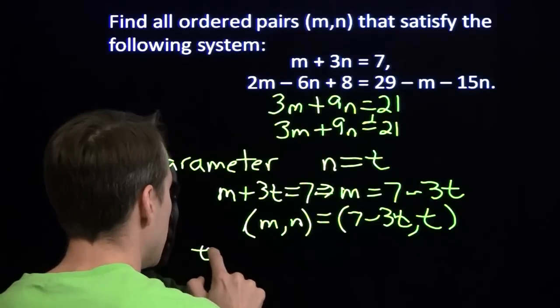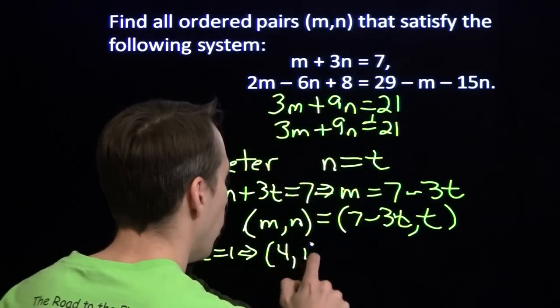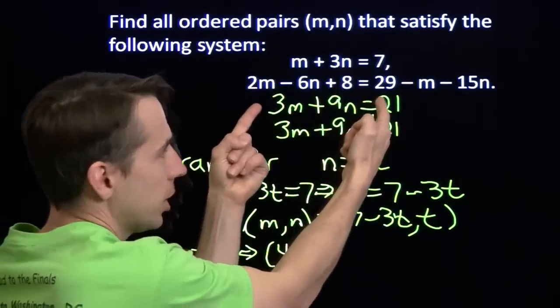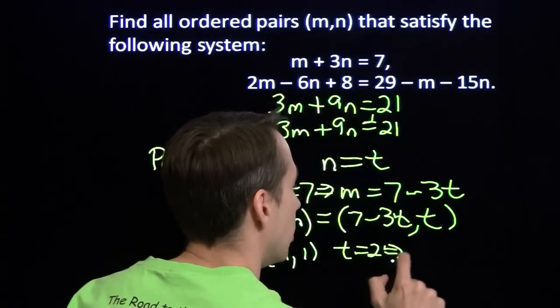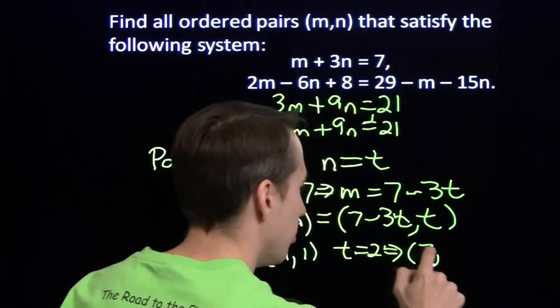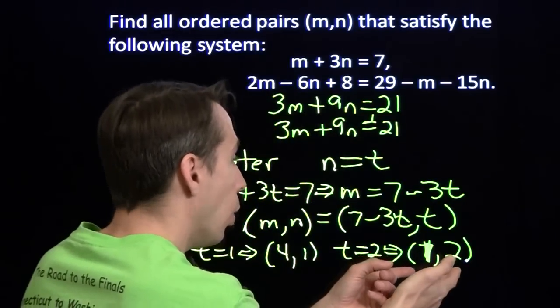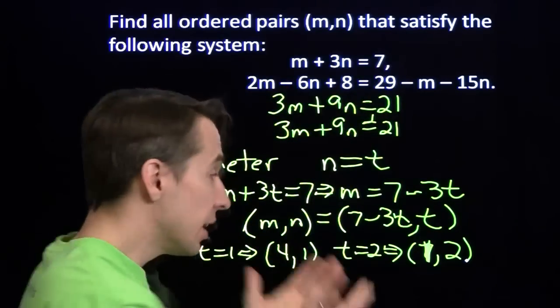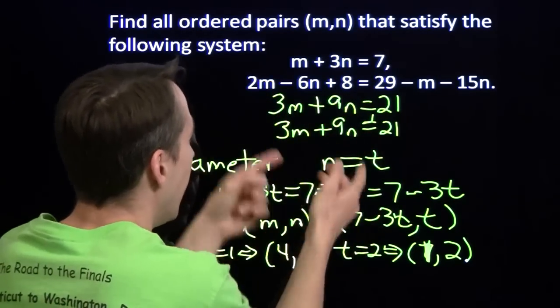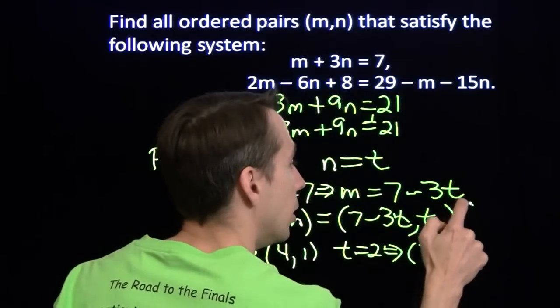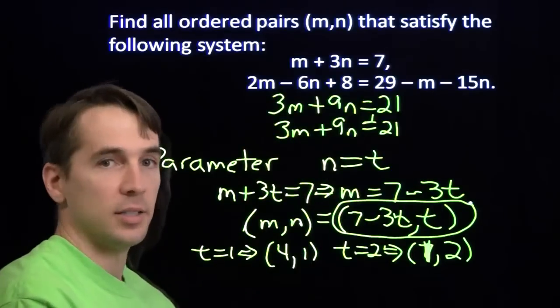For example, if I picked t equals 1, I'd put that in here, I'd get 4, 1. If we put 4, 1 in there, sure enough it works. It's going to work here because this equation is the same as that one. And look what happens when I pick, say, t equals 2. I'll get 7 minus 6, which is just 1. 1, 2. Now if I take 1, 2 and put that in here, 1 plus 6 is 7. That works as well. Anything I pick for t, I can use this little formula here to grind out a value of m and I'll get a solution to this equation. So this describes all the ordered pairs that satisfy this system of equations, and there are infinitely many of them.